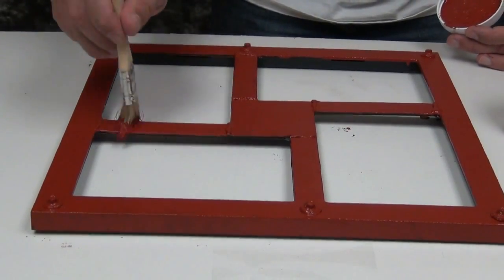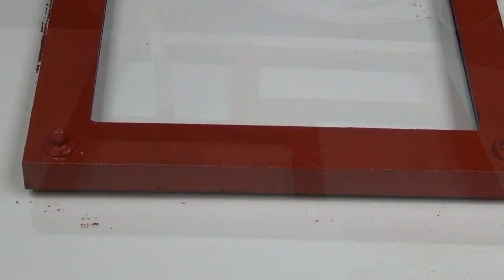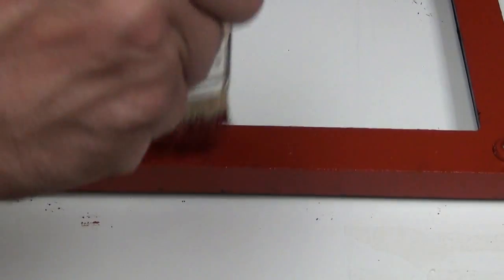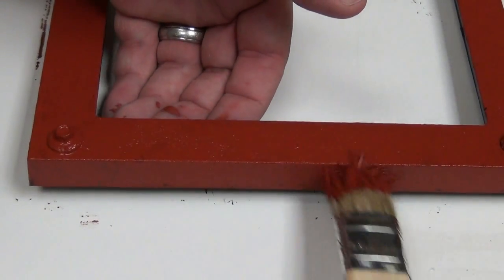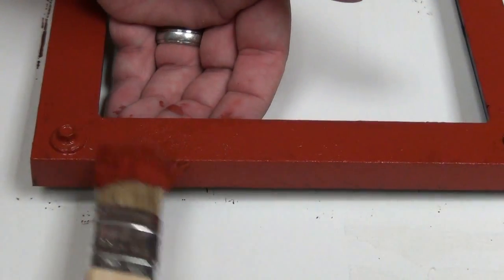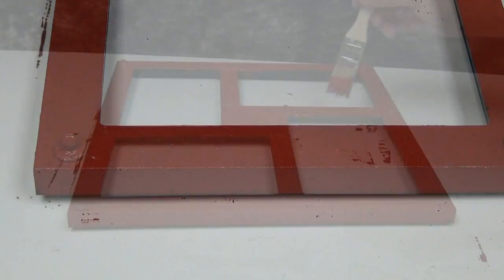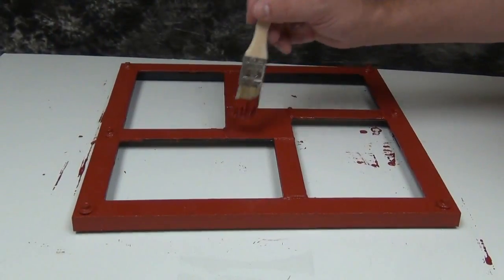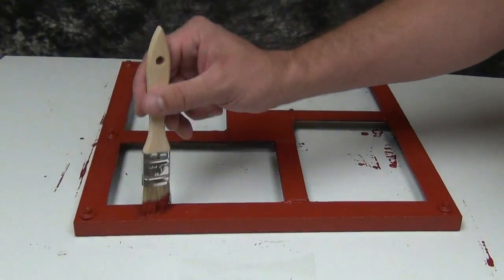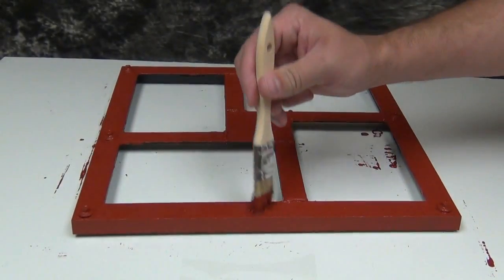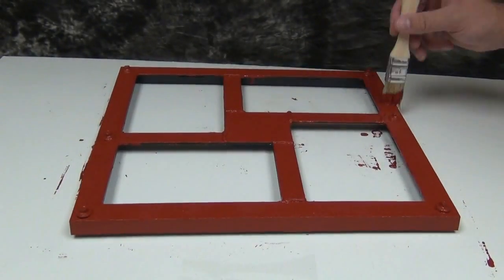Once your Primit primer is applied, you want to give that a couple of hours to completely dry and cure to allow for that metal coating to really bond to it well. Once you've finished brushing that on and stippling out the surface, you're ready to allow that to dry completely.